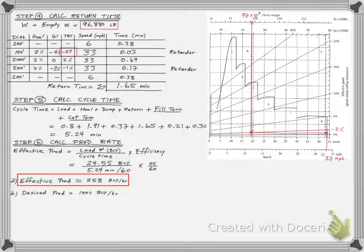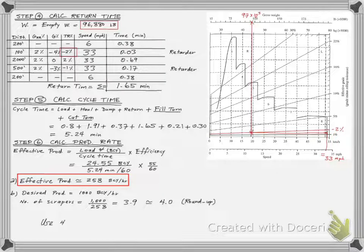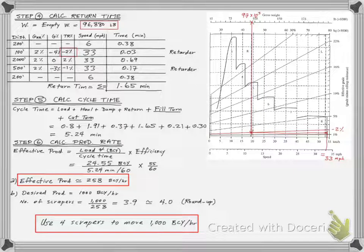In part B, we need to achieve a production target of 1,000 bank cubic yards per hour. The number of scrapers we need equals the production target value divided by the productivity of a single scraper. We conclude by finding that we need four scrapers in this operation to move 1,000 bank cubic yards of soil per hour.